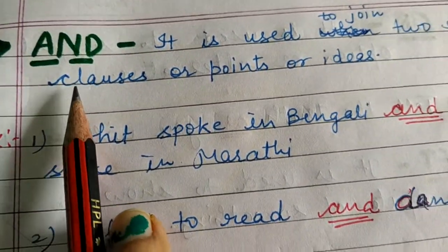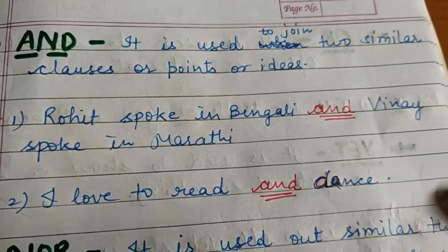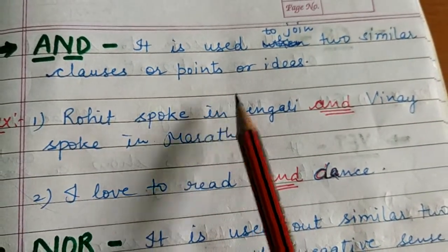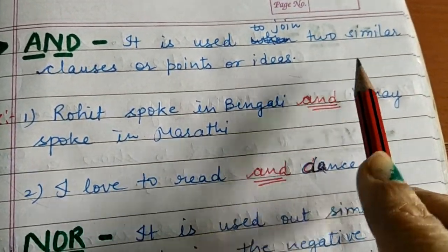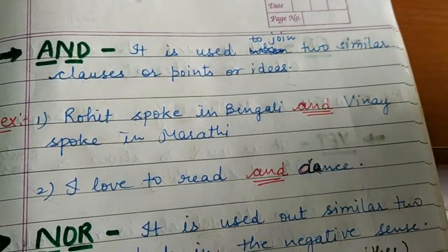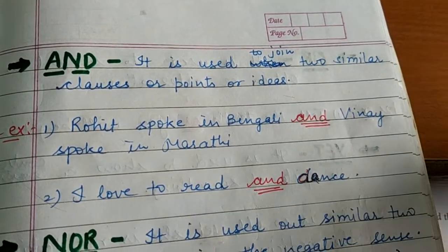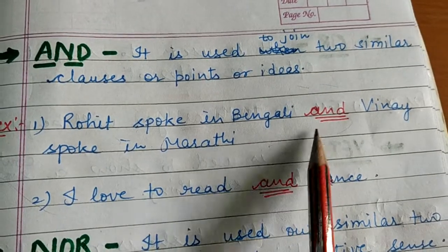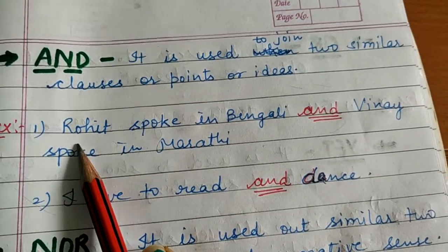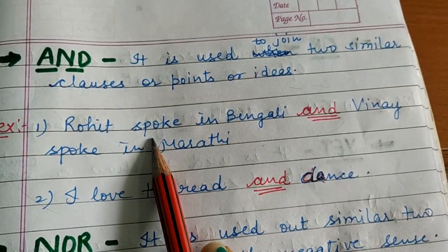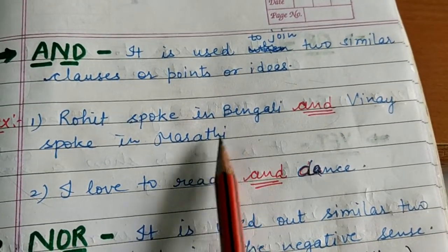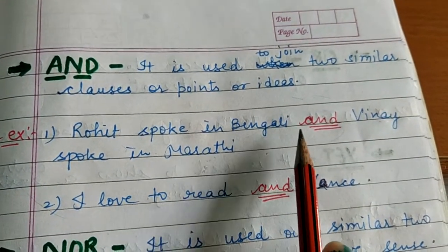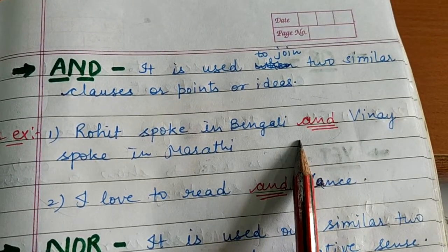Next conjunction is 'and', which is also very commonly used in the English language. It is used to join two similar clauses, points, or ideas. Similar ideas ko, similar clauses ko join karne ke liye hum 'and' ka use karte hain. Example: 'Rohit spoke in Bengali and Vinay spoke in Marathi.' Here we are talking about Rohit and Vinay and their languages — same ideas, same points. To join these two sentences, we have used the coordinating conjunction 'and'.